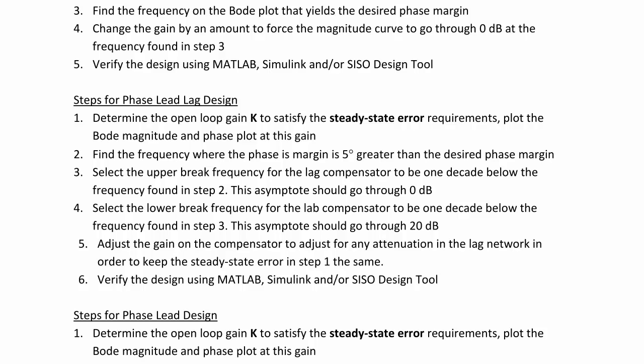The steps for phase lag lead design are to determine the open loop gain k to satisfy the steady state error requirement, plot the Bode magnitude and phase plot at this gain, find the frequency where the phase margin is 5 degrees greater than the desired phase margin, select the upper break frequency for the lag compensator to be 1 decade below the frequency found in step 2,